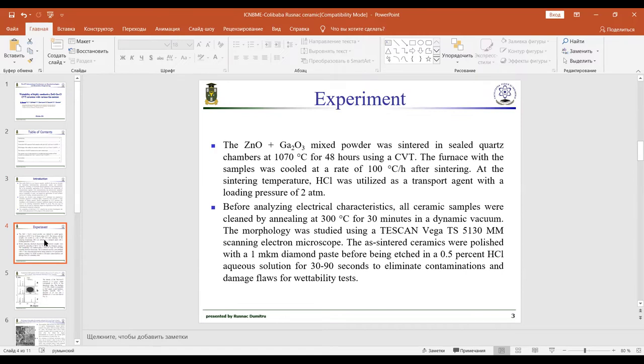At the sintering temperature, hydrogen chloride was utilized as a transport agent with a loading pressure of 2 atmospheres. Before analyzing electrical characteristics, ceramic samples were cleaned by annealing at 300 degrees Celsius for 40 minutes in dynamic vacuum.